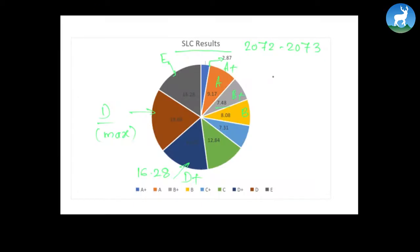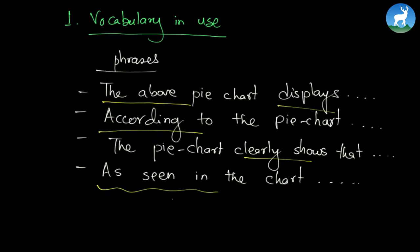Now can you use the given phrases and explain the pie chart? For example: 'The above pie chart displays the SLC results of the students in the academic year 2072 and 73.' According to the pie chart, 9.17% of the total students got A grade which is excellent. The pie chart clearly shows that 19.69% of the students got D, which is quite insufficient. As seen in the pie chart, 16.28% of the students got E, which is very very insufficient.